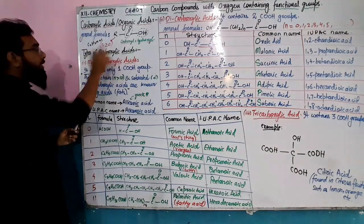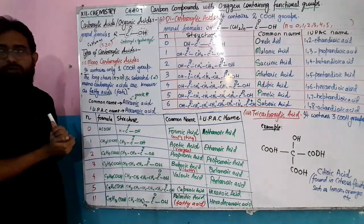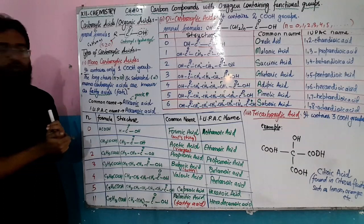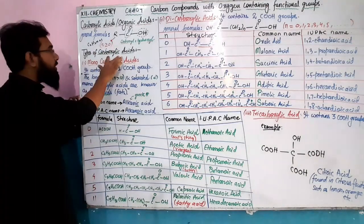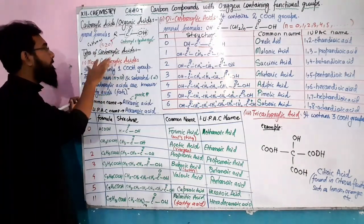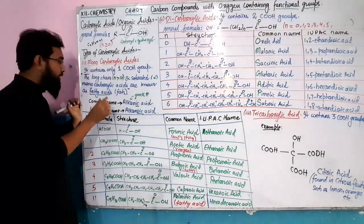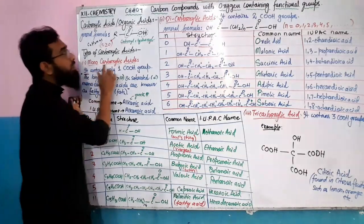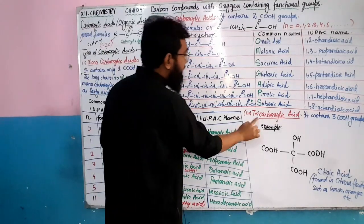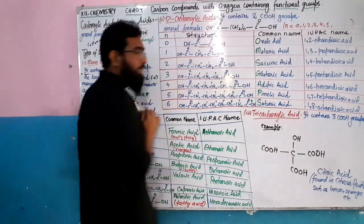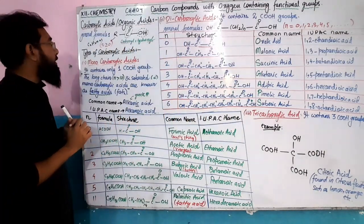There are three types of carboxylic acid. The classification gives three types: monocarboxylic acid, dicarboxylic acid, and tricarboxylic acid. The difference is simply in the number of carboxyl groups at the end of the compound.